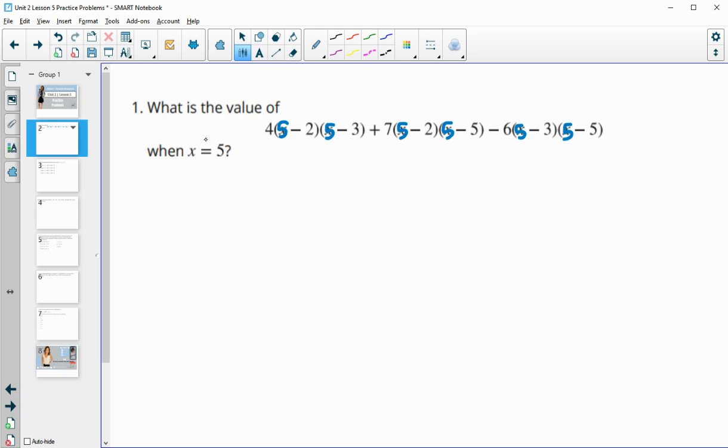So we're just going to plug in 5 for each of these. Now one thing that I notice in this expression is that we have a 5 minus 5 here. So this is going to be 7 times 3 times 0. So this whole thing is going to be 0. We also have a 0 here, a 0 factor here. 5 minus 5 is 0. So no matter what this part is, it's going to be 0.